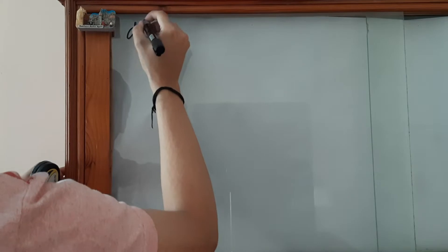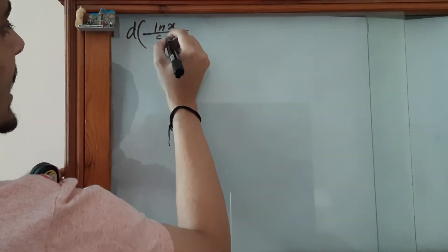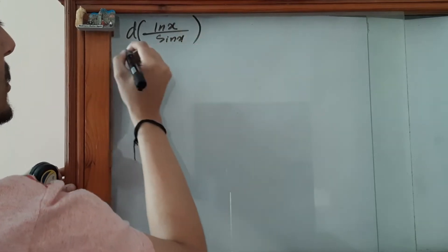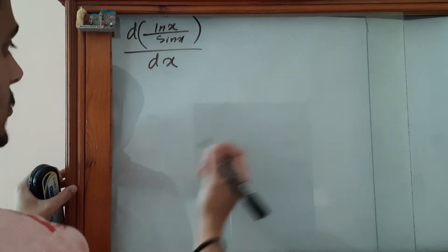Differentiate ln(x)/sin(x) with respect to x. Here we are going to use the quotient rule.